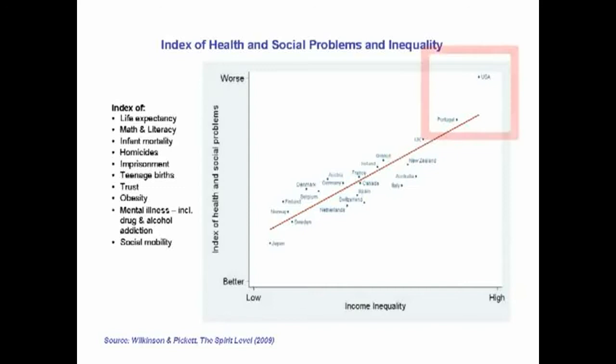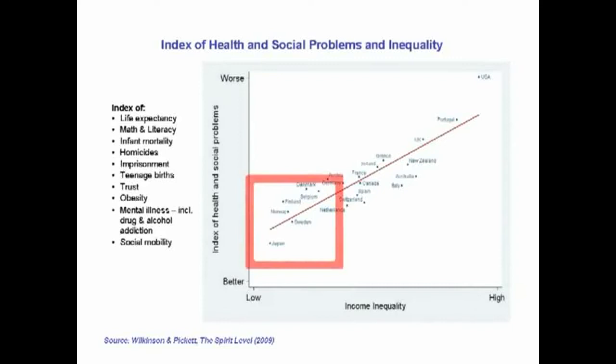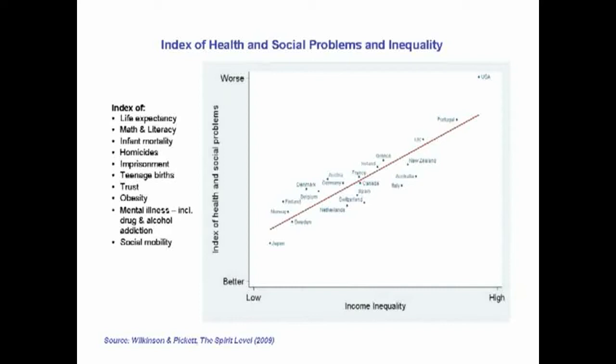Up at this end, in the USA, the richest 20% of the population have about eight or nine times as much income as the bottom 20%. Down here it's about four times as much. That's the scale of the income differences. And you can see how close the correlation is between the degree to which a country has a high level of health and social problems or is doing better.